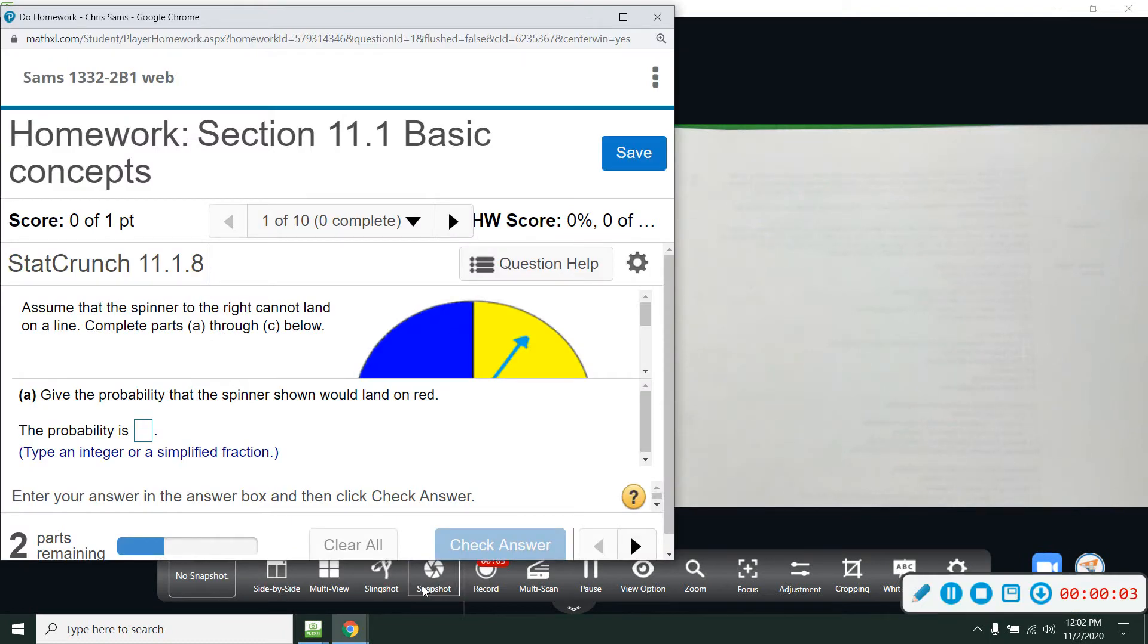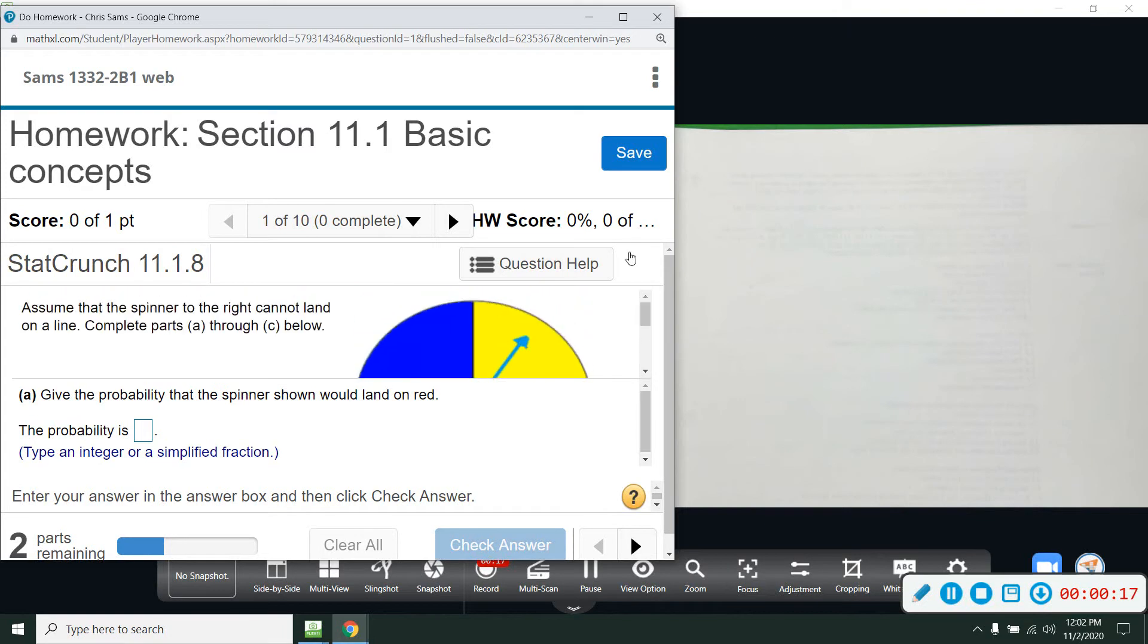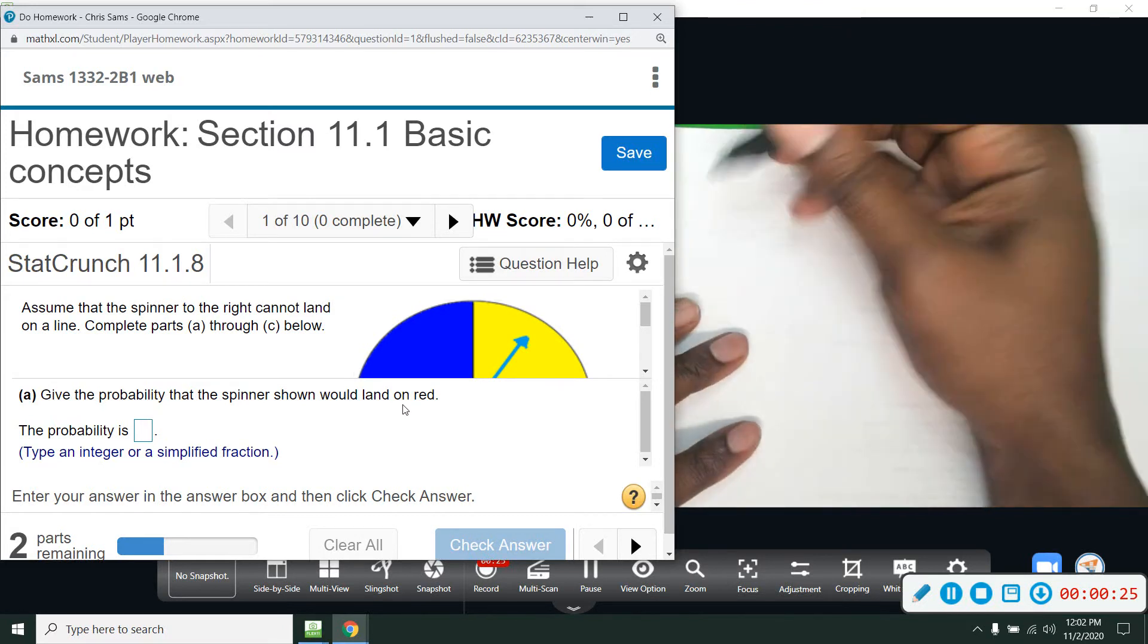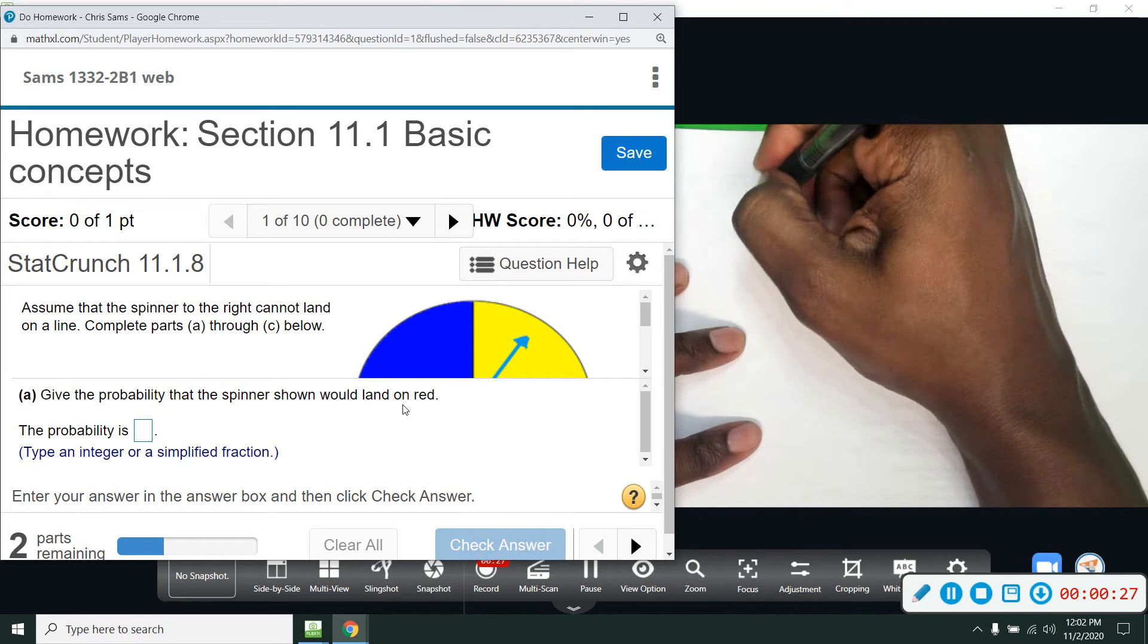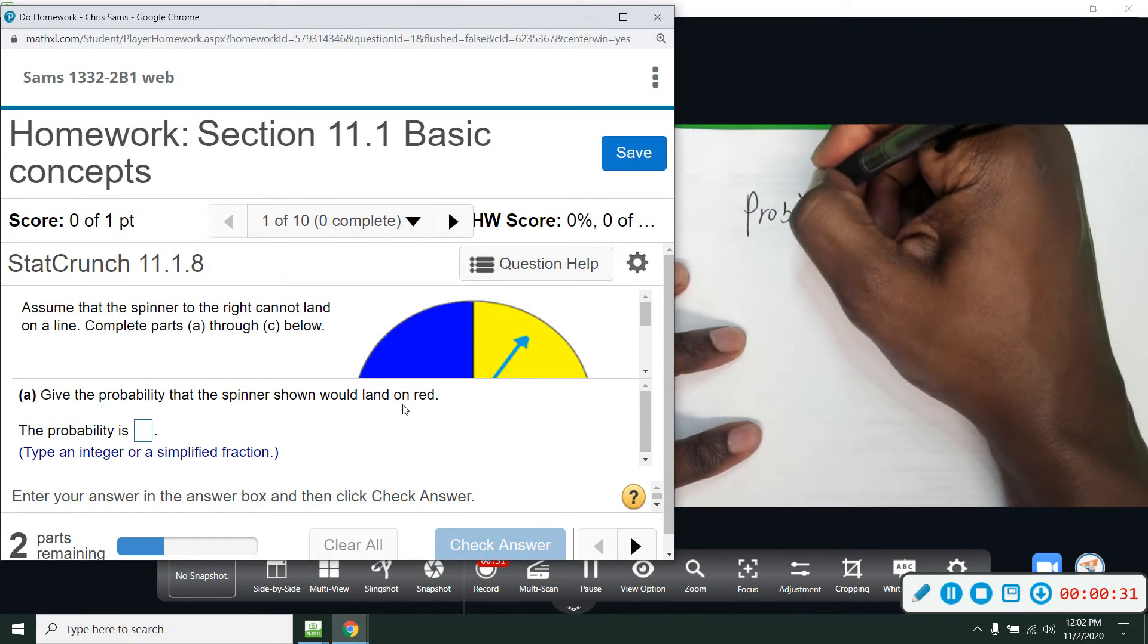All right, Section 11.1, basic concepts. We're going into probability here. This first one assumes that the spinner on the right cannot land on the line. We're going to complete parts A through C. So we have a circle that has four sections and we're going to spin it. Part A wants to know the probability it will land on red.